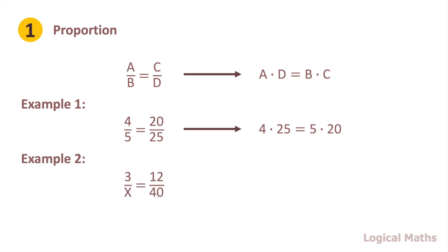In another example, we have one unknown number. To find it, we need to divide both sides by 12. So the unknown number is 10.